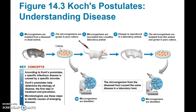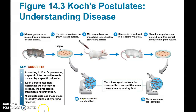This figure from your book shows the steps of Koch's postulates. You have the diseased or dead animal, isolate the microorganisms, grow them in culture, inoculate a healthy lab animal, observe the same disease in the inoculated animal, then isolate the microorganism from that lab animal, grow it in culture, and use identification methods to confirm it is the same as the one isolated from the original sick animal.